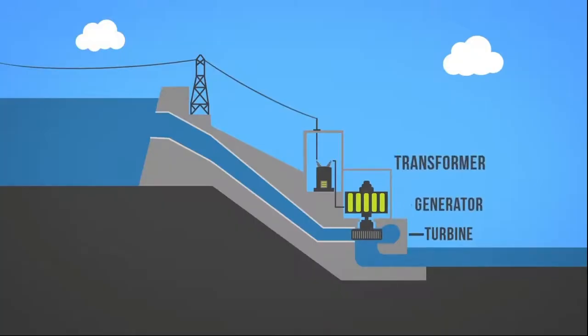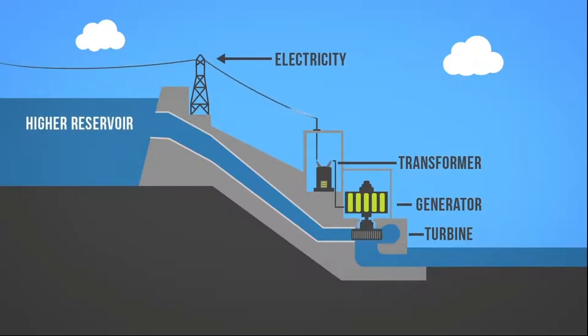Where else do we perceive energy in day-to-day life? If something is high relative to us, we know it can fall — there's gravitational energy. Whether that's the coconut in Gilligan's Island falling from a tree and hitting Gilligan on the head, or something more modern like a hydroelectric power plant where water is kept at a high height, and when it rushes down to a lower height a turbine spins and electricity is generated.